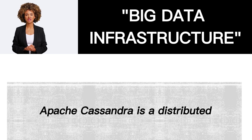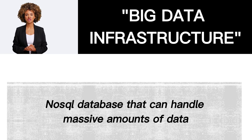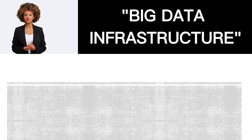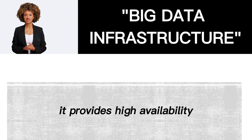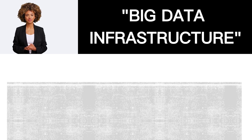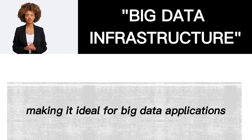3. Apache Cassandra — Apache Cassandra is a distributed NoSQL database that can handle massive amounts of data across multiple servers. It provides high availability, fault tolerance, and scalability, making it ideal for big data applications.